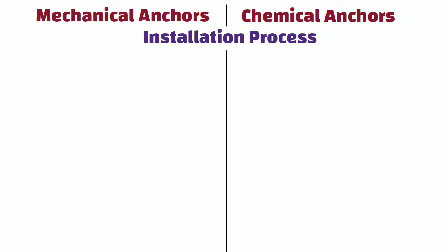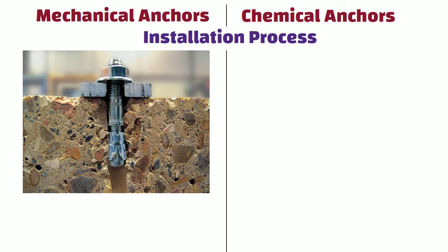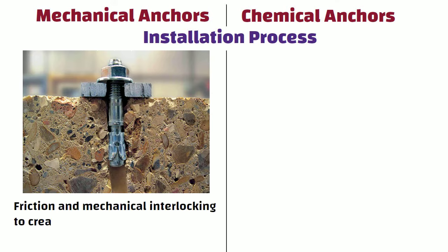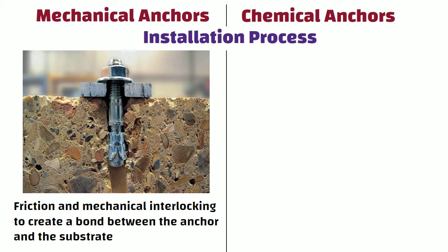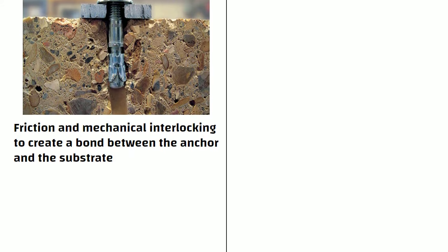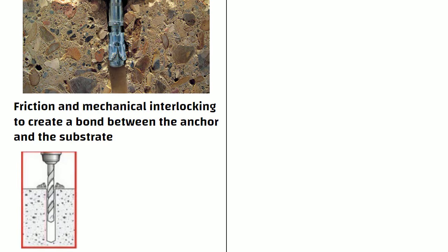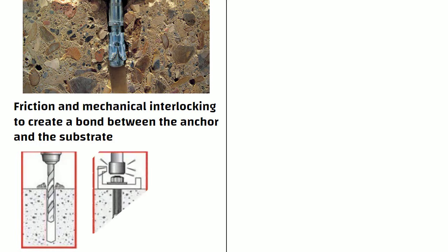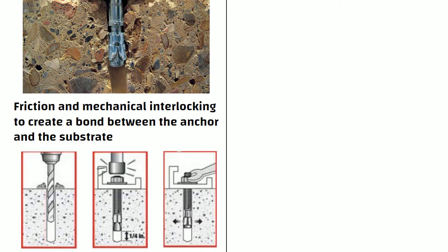Installation Process: Mechanical anchors rely on friction and mechanical interlocking to create a bond between the anchor and the substrate. They are installed by drilling a hole into the substrate and then inserting the anchor into the hole. Once inserted, the anchor is expanded or screwed into place using a bolt or screw.